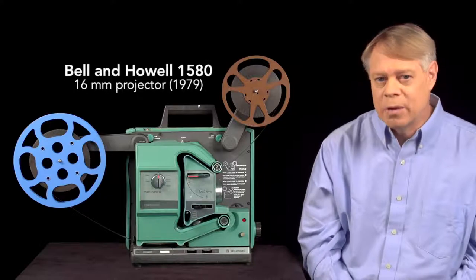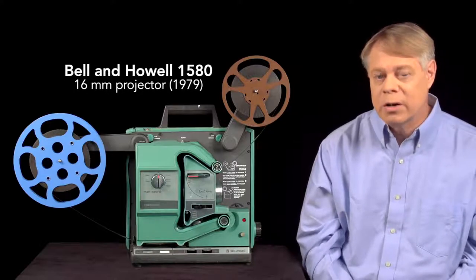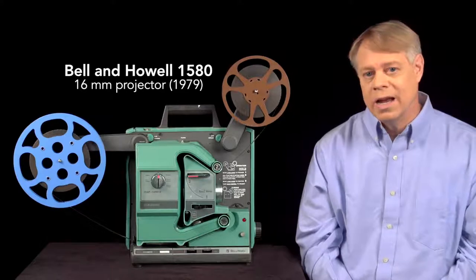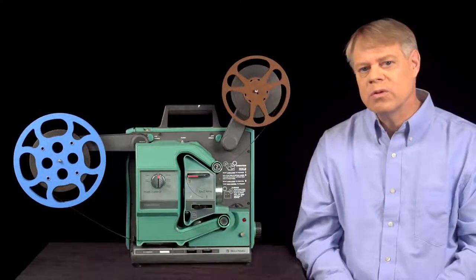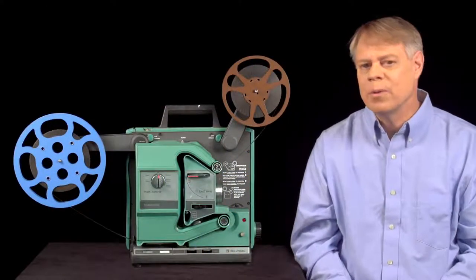I'll examine this Bell & Howell 1580 16mm projector built in 1979. We'll look at the shuttle that starts and stops the film, the shutter that strategically blocks light, and the photo sensor that reads the sound, all of which operate in harmony.